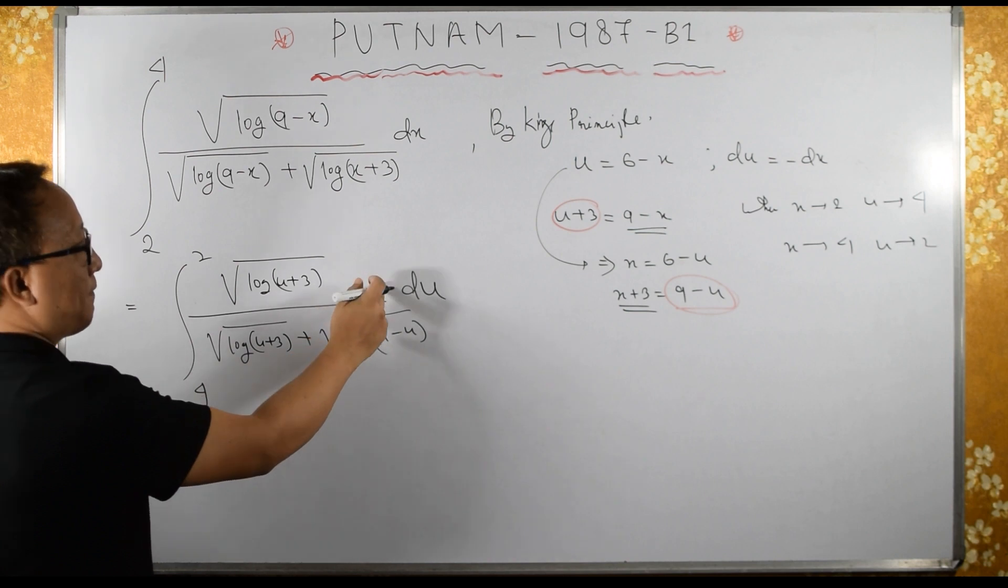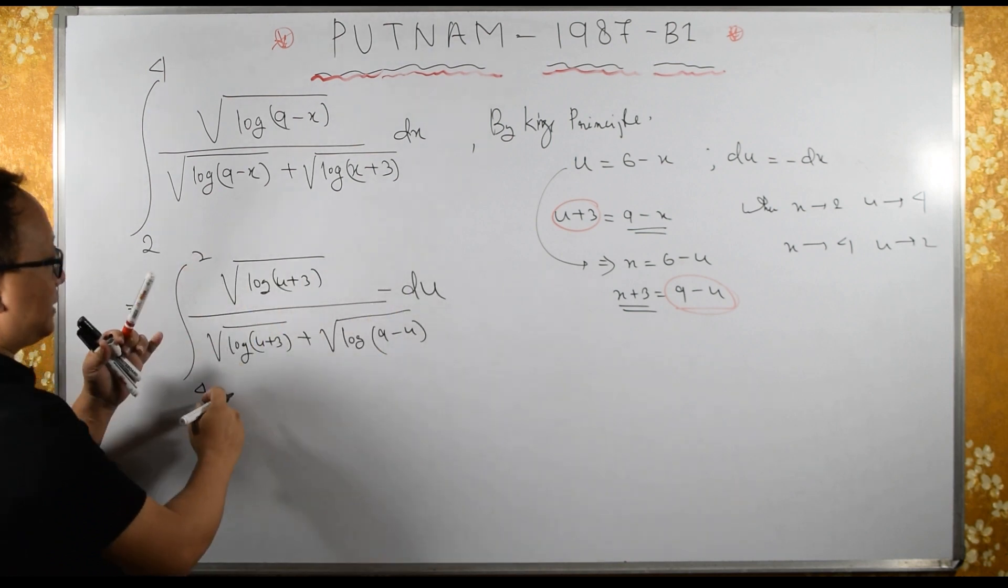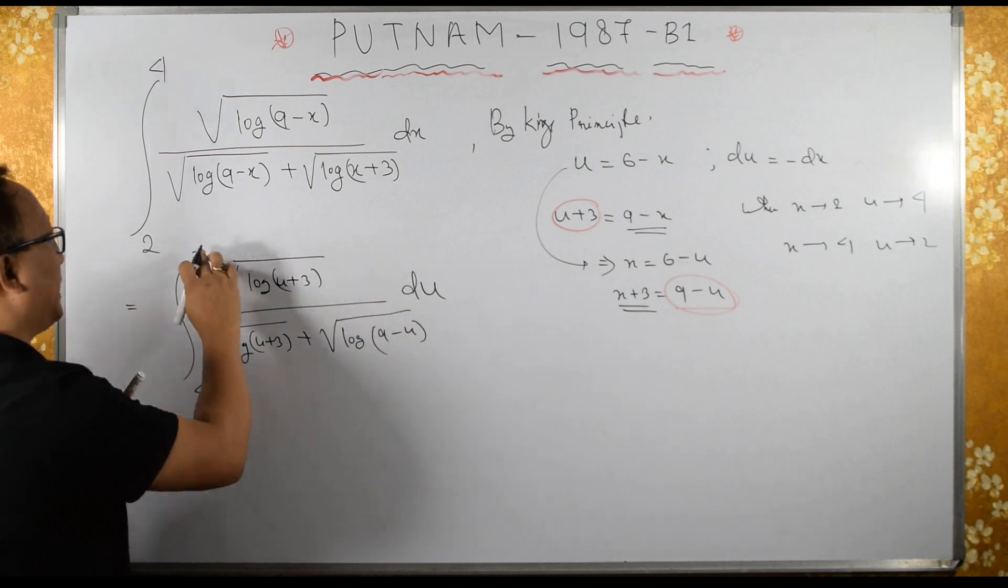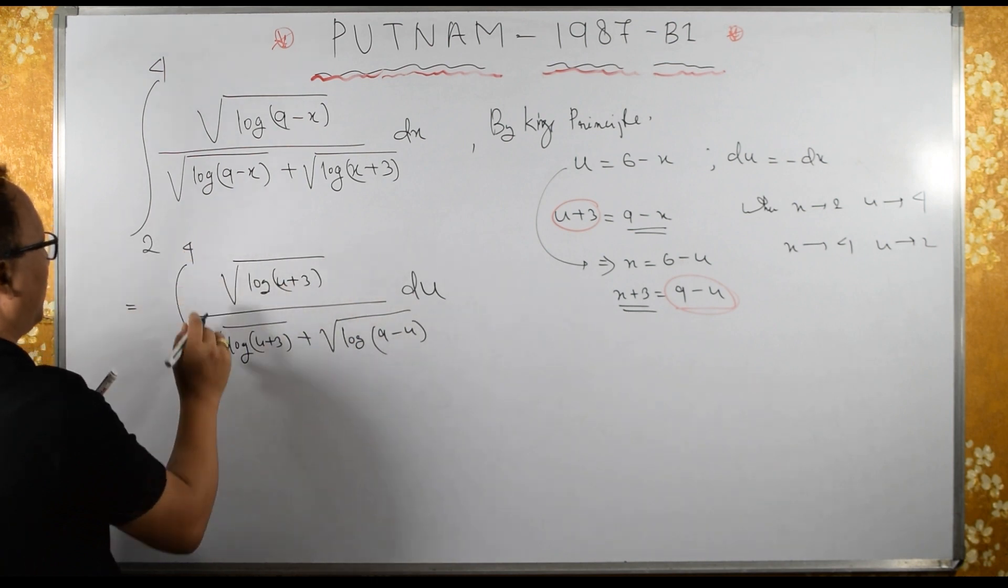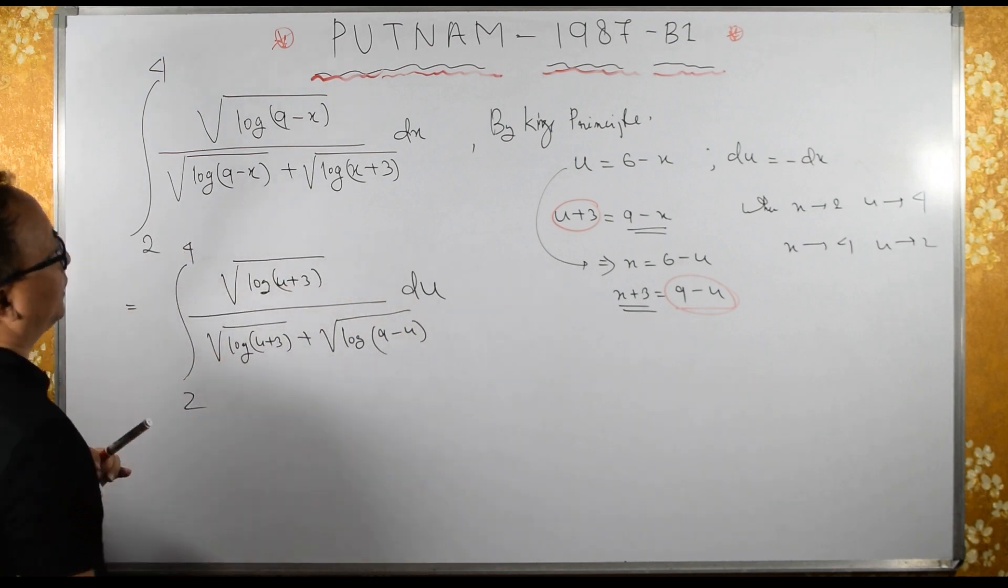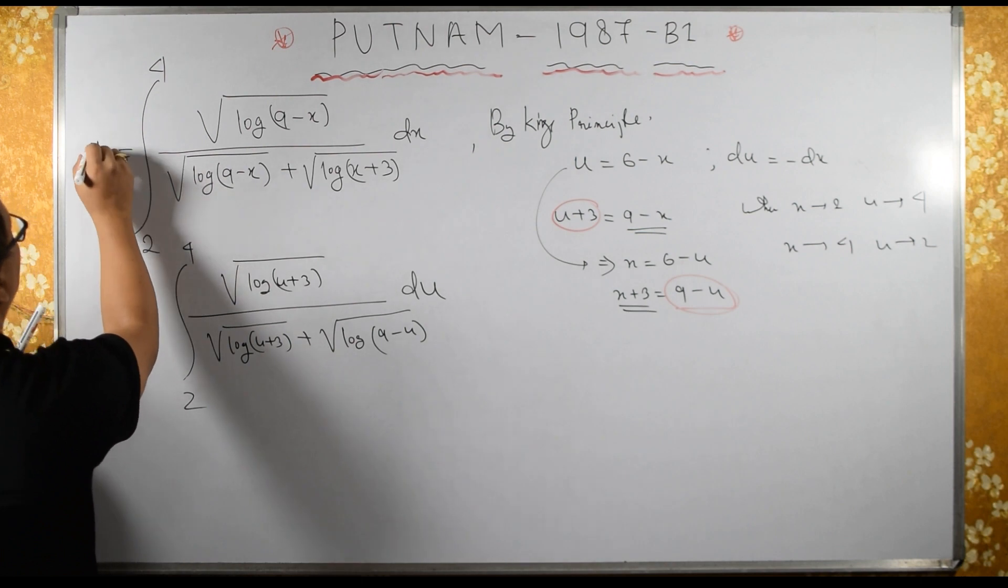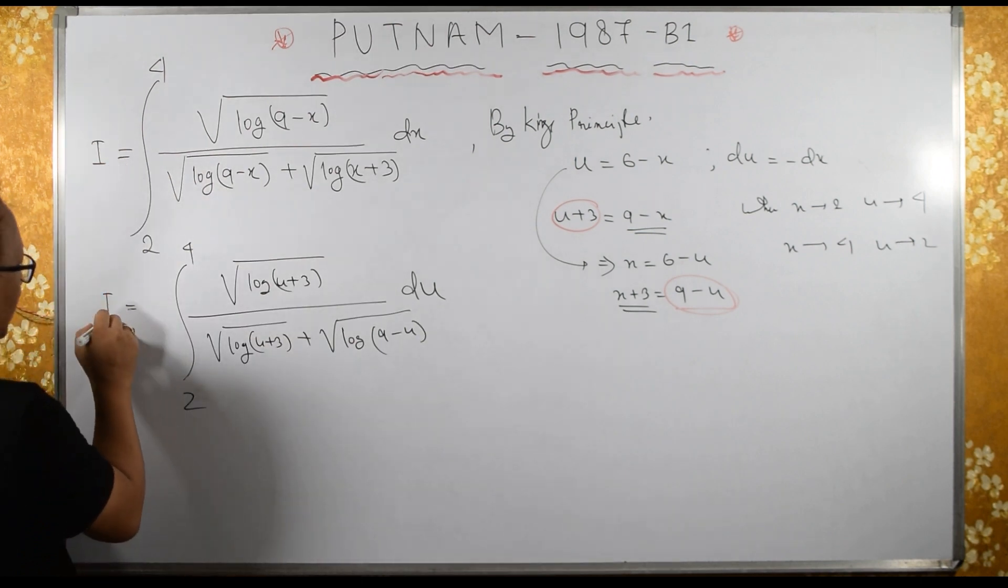This minus, I will change the limits. I will remove this minus and change this limit to 2 to 4. Now, let us consider this is i and this also, let us consider this i.